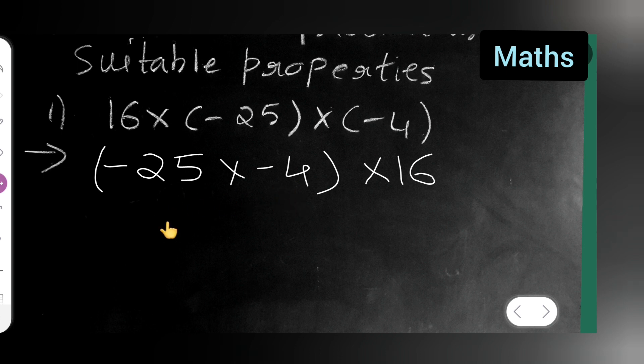Because when we multiply 25 by 4 it will be 100, right? So it will make it easier. So 25 multiplied by 4, minus into minus will be plus, so it will be 100. You have to multiply and then multiply with 16.